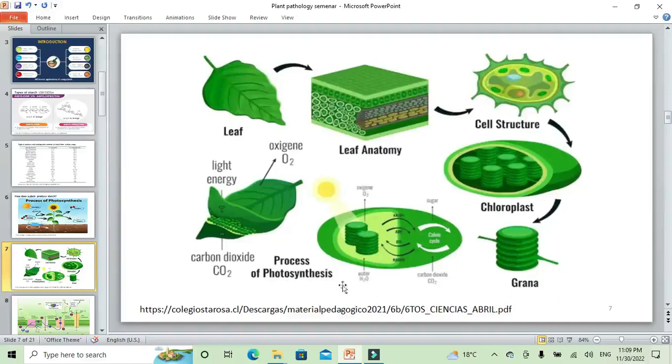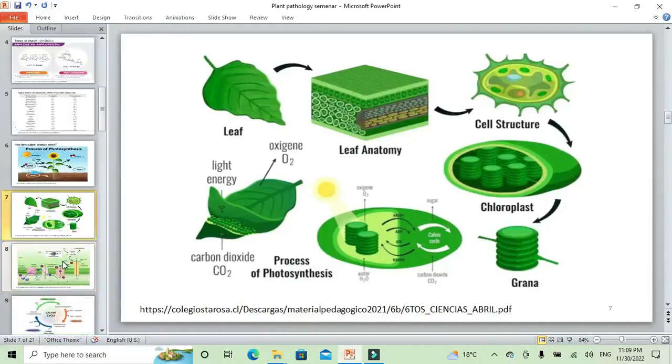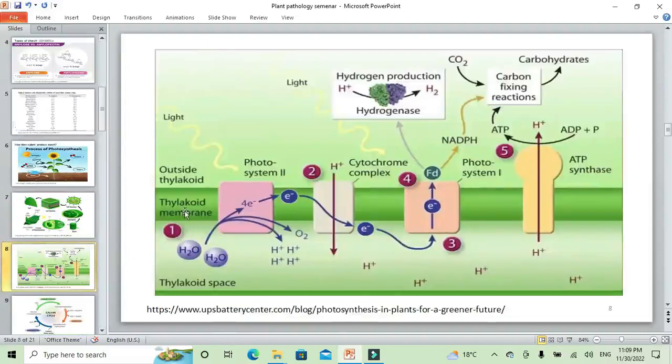In this process, photosynthesis, the plant in the morning in the solar light can produce ATP and NADPH. We can use NADPH and ATP in Calvin cycle to produce the glucose and the starch.